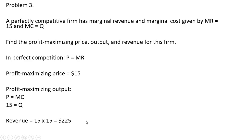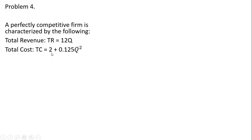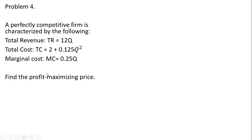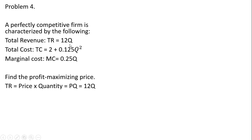Problem four. A perfectly competitive firm is characterized by a total revenue equation of 12 times Q and a total cost equation from which we are given marginal cost. With calculus, marginal cost is the derivative of total cost. The profit maximizing price is not directly given, but we can back into it: since total revenue equals price times quantity, and TR equals 12Q, the 12 represents the profit maximizing price. The slope of total revenue equals marginal revenue, which is 12, and in perfect competition price equals marginal revenue, so price is $12.